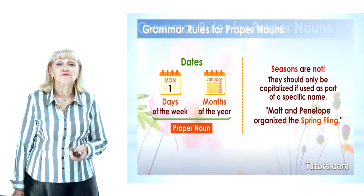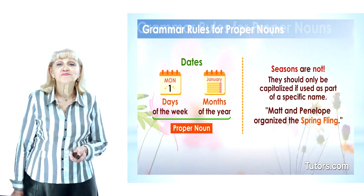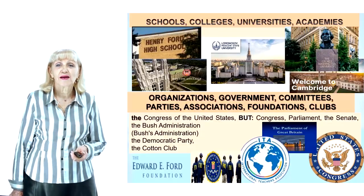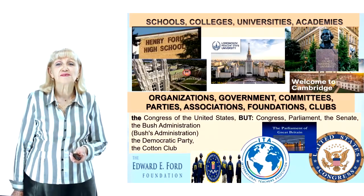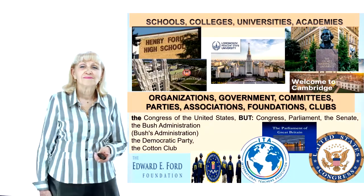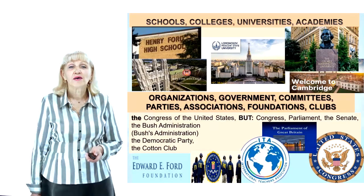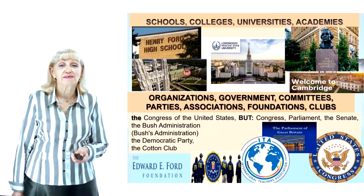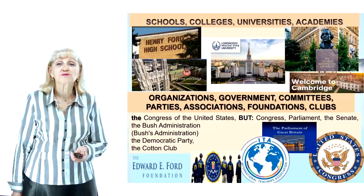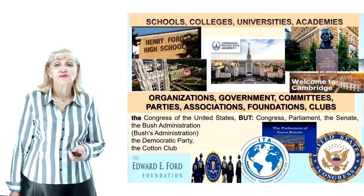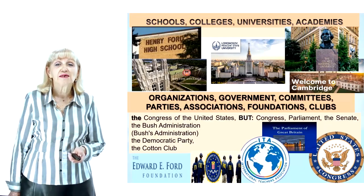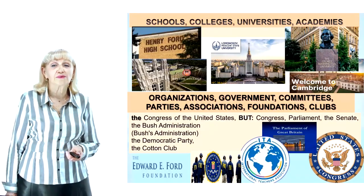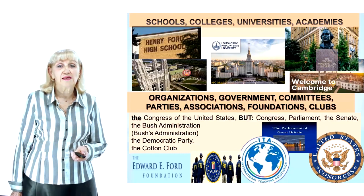For schools, colleges, universities and academies: no article is needed if the first word is the name of a place or the institution is named after a famous person or city, followed by a noun. For example: Ford High School, Boston College, Moscow State University, Cambridge University, Harvard University, London University. However, the definite article 'the' is used when there is a preposition as part of a possessive construction: the University of Oxford, the University of Cambridge — but the George University, the John Hopkins University. As for organizations, governments, committees, parties, associations, foundations, clubs and banks, the definite article is used.